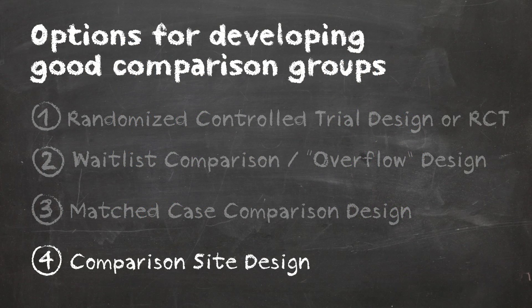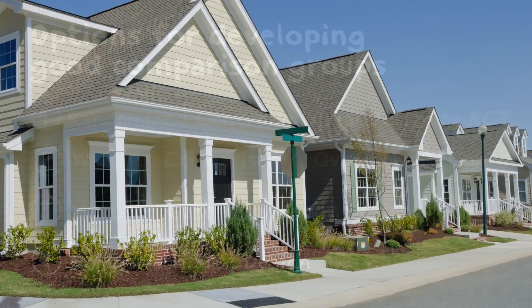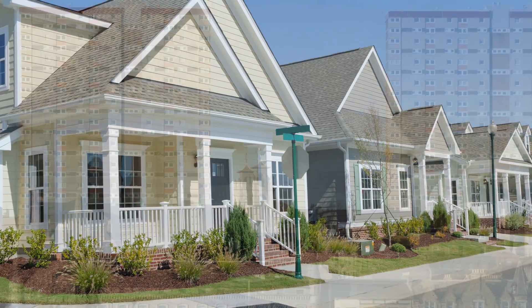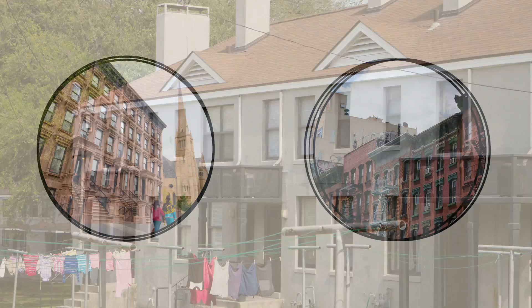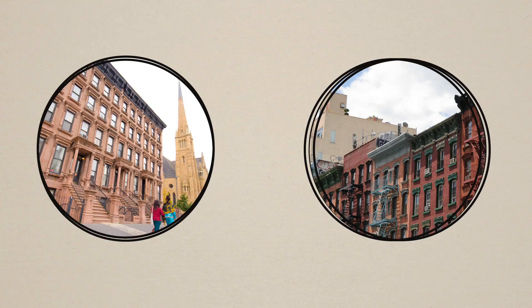One more option is a comparison site design. With this approach, a geographic community — such as a neighborhood, city, or county — is identified that has characteristics similar to those of the target community in which a new program or policy is being implemented.